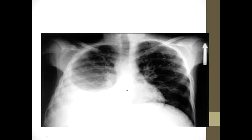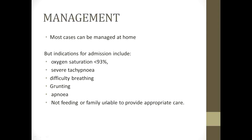This chest X-ray shows lobar pneumonia with the costophrenic angle obliterated, and the cardiophrenic angle also obliterated on the right side, indicating fluid in the lower chest. Regarding management: most cases can be managed at home if the child does not need oxygen and is not severely ill.